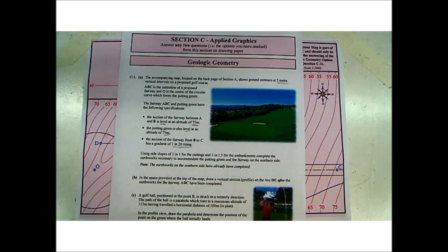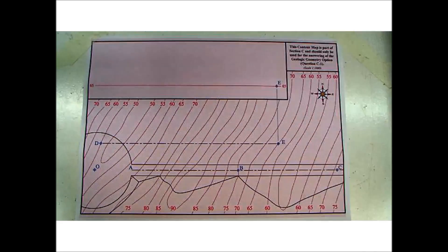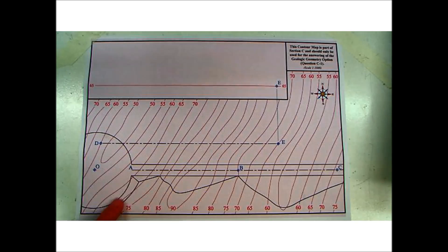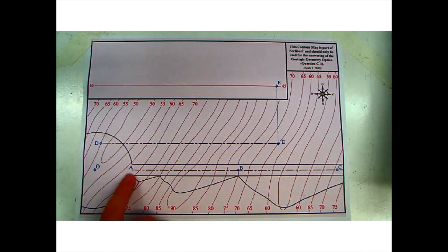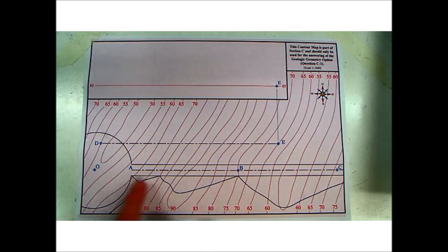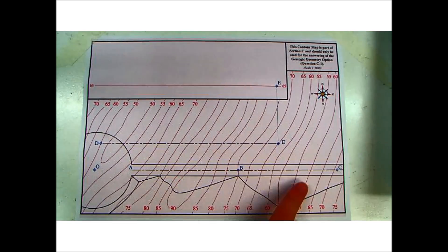Note the earthworks of the southern side has already been completed. So this is the page on the back of section A, and there you can see the circular green with center O, and our fairway ABC. A and B are all level at 75 meters altitude and then B to C is rising.